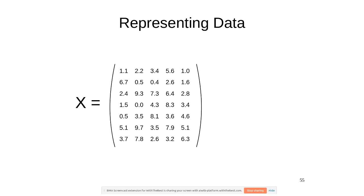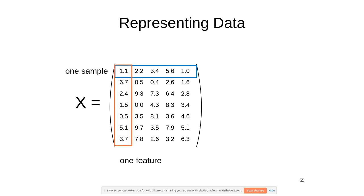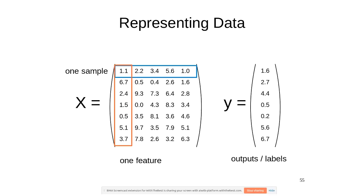Scikit-learn assumes your data is given as a two-dimensional NumPy array, usually called capital X, where each row corresponds to one sample and each column corresponds to one feature. For supervised tasks like classification and regression, we also have outputs or labels in a separate variable called lowercase y. For example, predicting whether a user clicked on an ad would be classification; predicting how much money they spent would be regression.